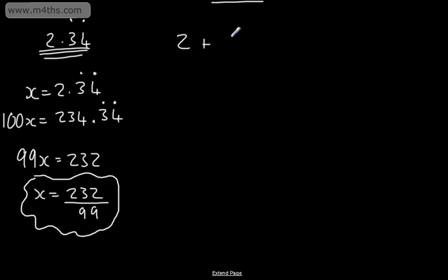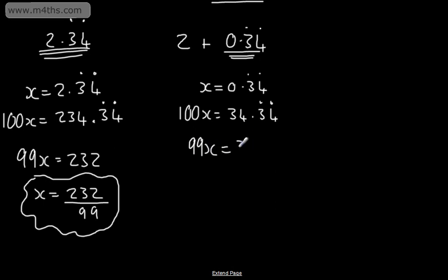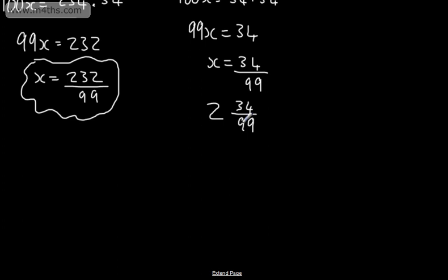Alternatively, what we could do is write this as 2 plus 0.34 and then consider the 0.34. So x is equal to 0.34 and let's just put the recurring on. So we can say now that 100x is equal to 34 and then we're going to have 0.34 recurring. So subtracting away 99x is equal to 34. x is going to be equal to 34 over 99. So bringing back the 2, we can say 2 and 34 over 99. That's a mixed number. If you wanted to convert this up, we could multiply that. It would give us now 198 over 99 plus the 34 over 99, which is going to give us now 232 over 99. Exactly the same.